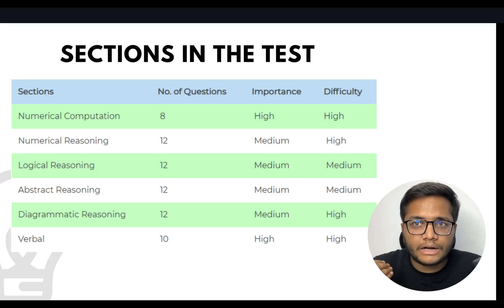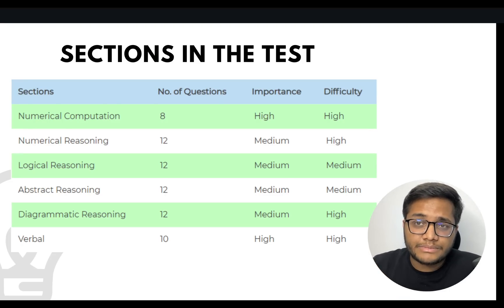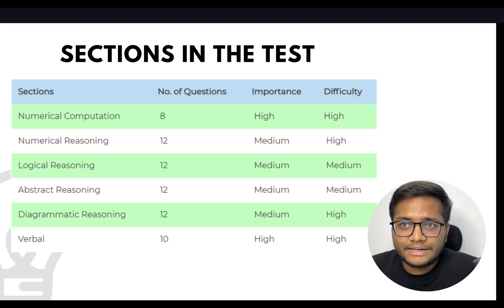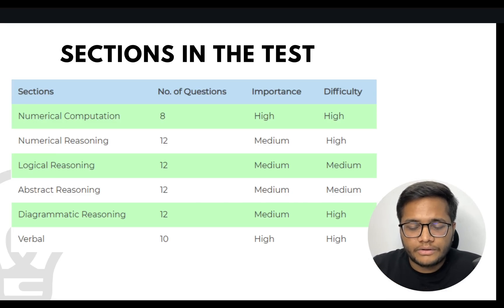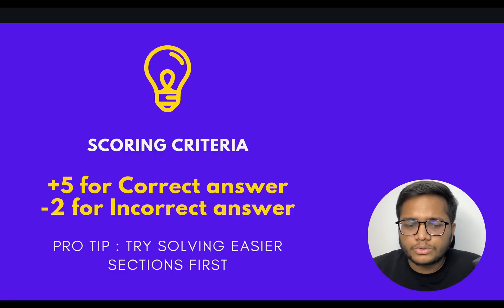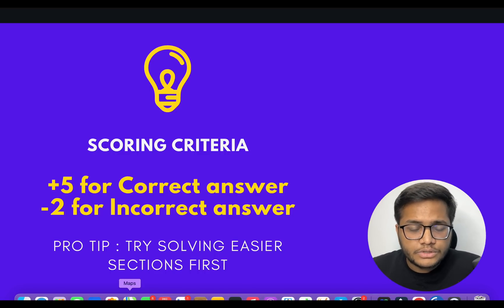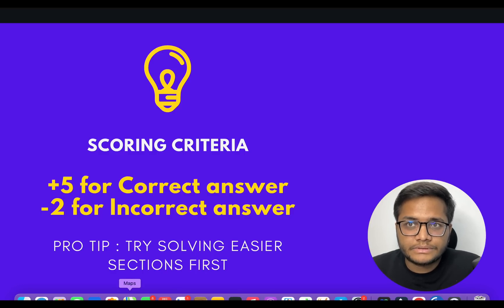Try attempting the easier parts first, then go for the harder parts, because easier questions can be completed on time. The major thing here is time management — in just 1.5 hours you need to solve 66 questions. The scoring criteria is +5 for a correct answer and -2 for an incorrect answer, so solve the easier sections first and aim to solve as many questions correctly as possible.